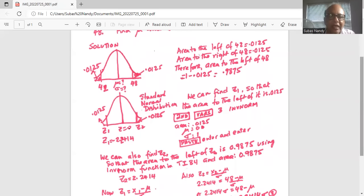And we go down, area is now 0.9875, mean is 0, standard deviation is 1. And we will get Z2 as 2.2414.